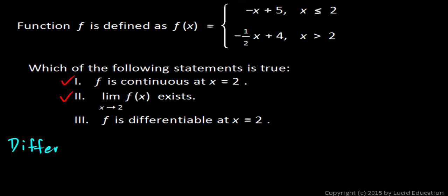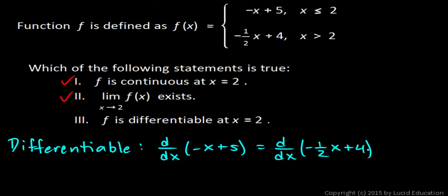So in order for the function to be differentiable at x equals 2, where the definition changes, then the derivative of this first piece, negative x plus 5, has to equal the derivative of this second piece, negative 1 half x plus 4, when x equals 2.